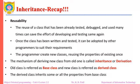Once a class has been written and tested, it can be adopted by other programmers to suit their requirements. A programmer can create new classes using the properties of existing classes. The mechanism of deriving a new class from an old one is referred to as derivation or inheritance — it is called derivation because we are deriving the new class using the properties of the existing class.